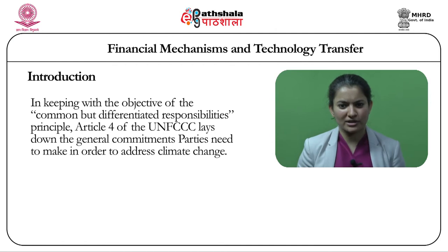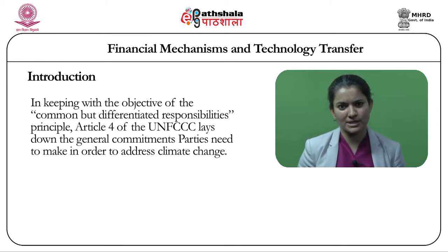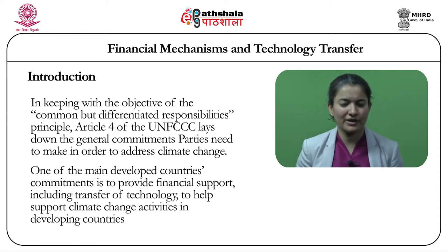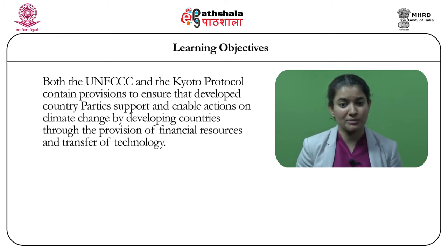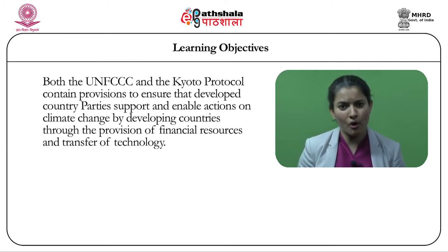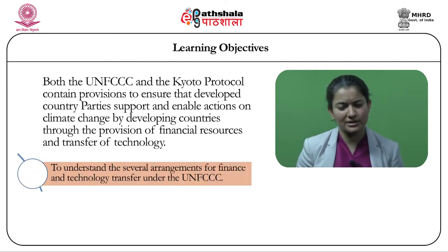Moving forward, we try to understand what these provisions are. In keeping with the objectives of the Common but Differentiated Responsibilities Principle, Article 4 of the UNFCCC lays down the general commitments parties need to make in order to address the issue of climate change. One of the major developed country party commitments is to provide financial support including the transfer of technology to help support climate change activities in developing countries. The main learning outcome of this module is to understand the several arrangements for finance and technology transfer under the UNFCCC.